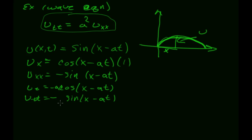Then another factor of negative a comes out, so altogether I have negative a times negative a times sine(x minus at). That's three negatives total — this stays negative. So u_tt is going to be negative a squared sine(x minus at).